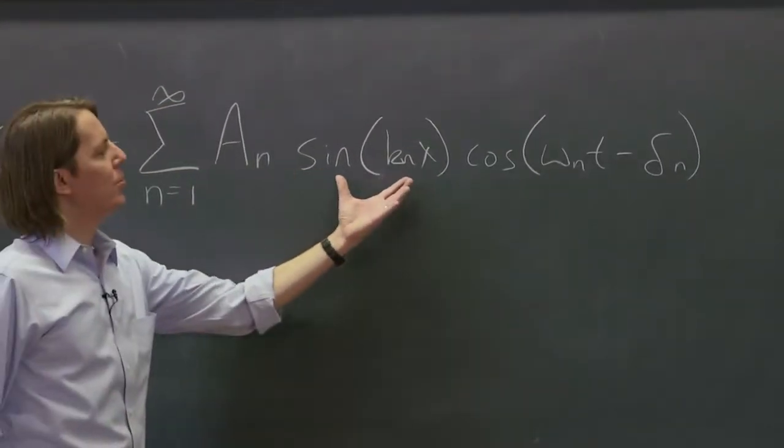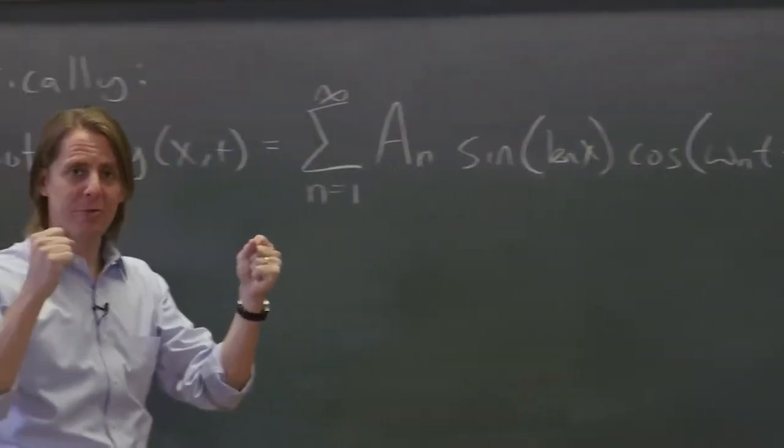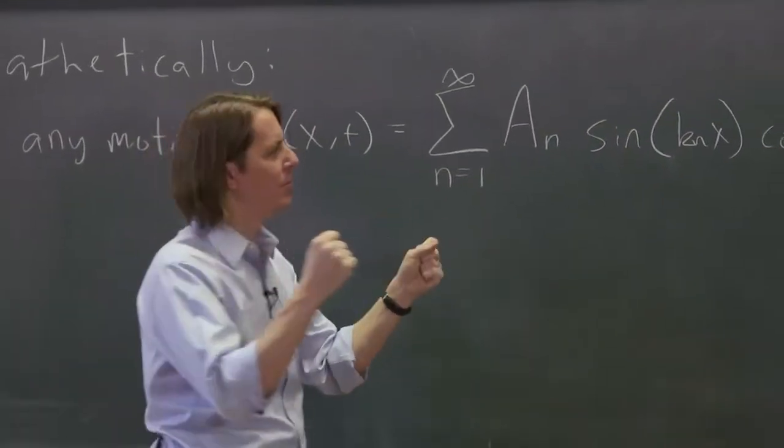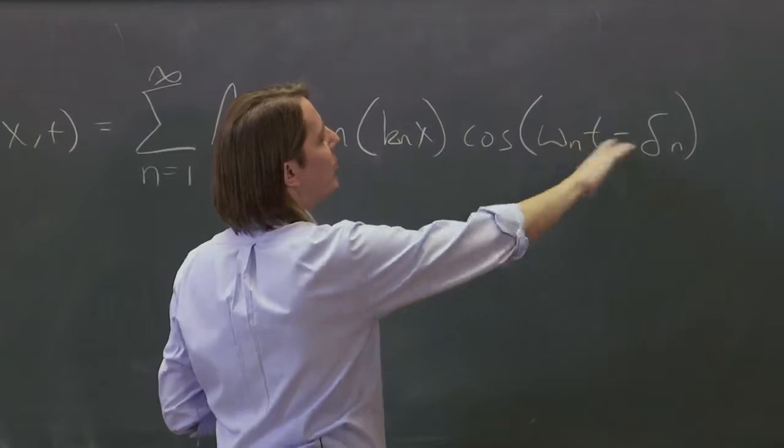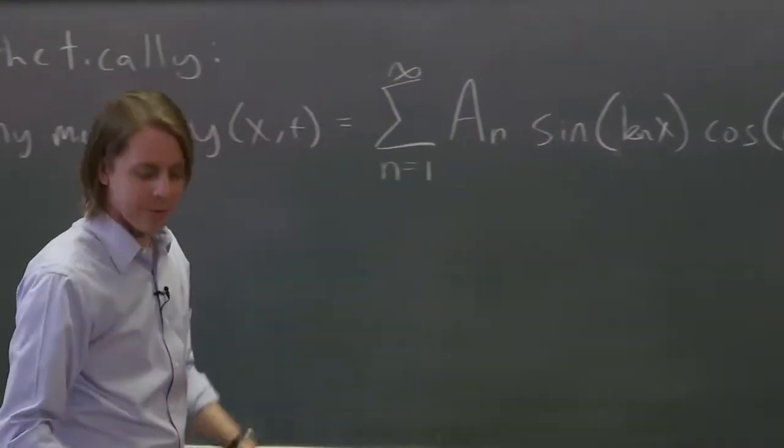The shape is well described with a sine function, because we're doing a clamped string still. Everything we do will be for a clamped string. But these different normal modes don't have to all happen in phase together, they could happen out of phase.